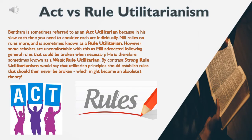Act versus Rule Utilitarianism. Bentham is sometimes referred to as an act utilitarian because in his view each time you need to consider each act individually. Mill relies on rules more and is sometimes known as a rule utilitarian. However, some scholars are uncomfortable with this as Mill advocated following general rules that could be broken when necessary — he is therefore sometimes known as a weak rule utilitarian. By contrast, strong rule utilitarianism would say that utilitarian principles should establish rules that should then never be broken, which might become an absolutist theory.